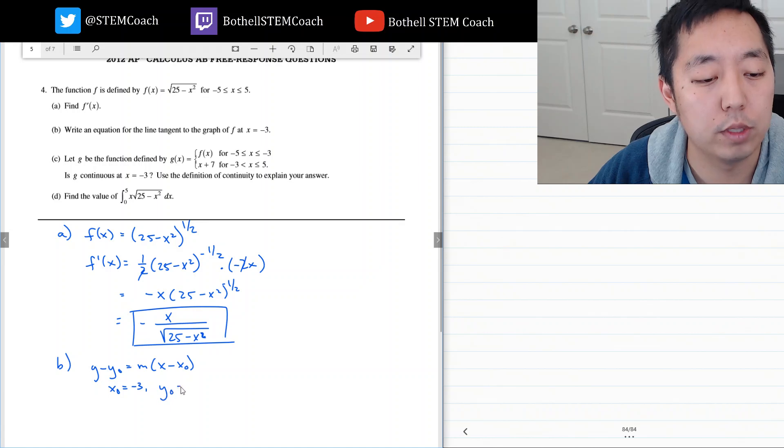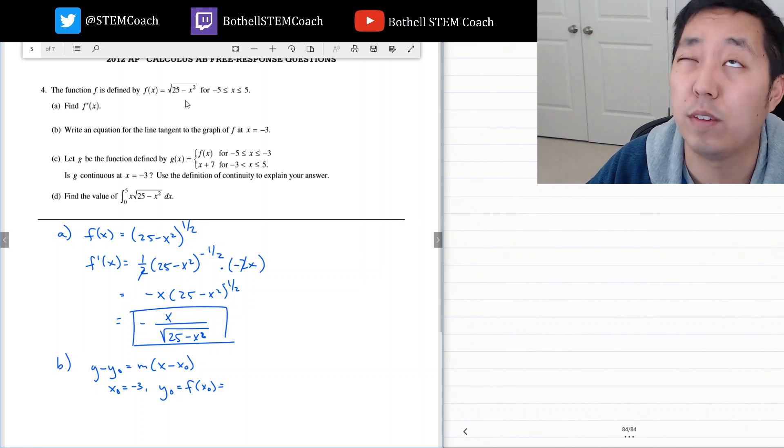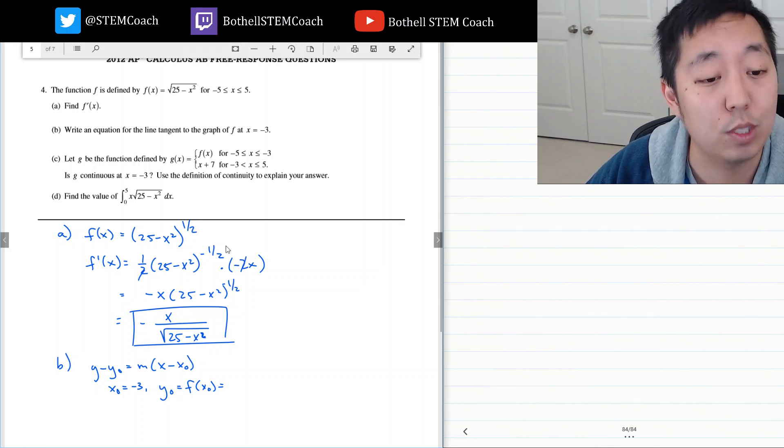Y naught would just be simply the function at x naught which is f of negative 3. Negative 3 squared is 9. 25 minus 9 is 16. Square root of 16 is 4.